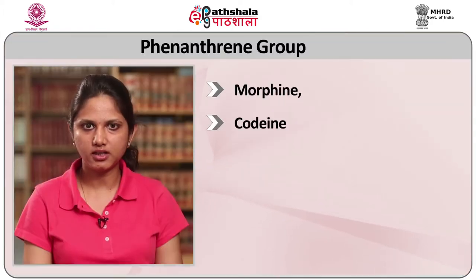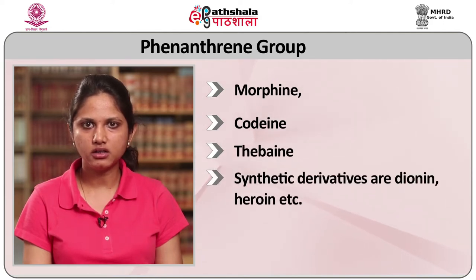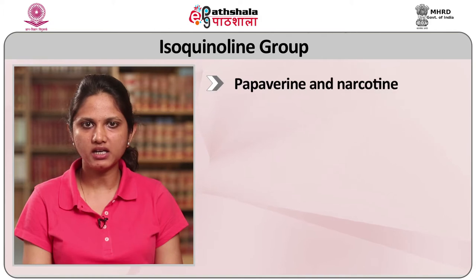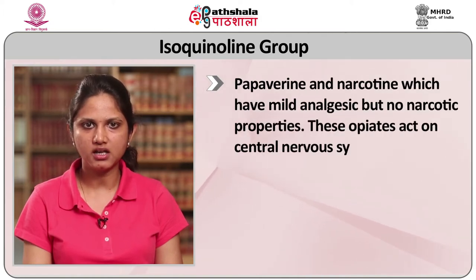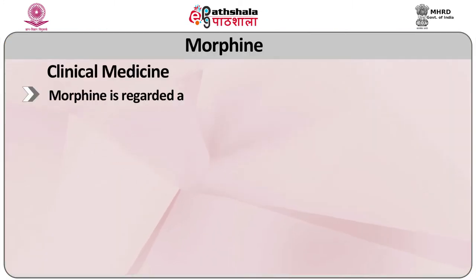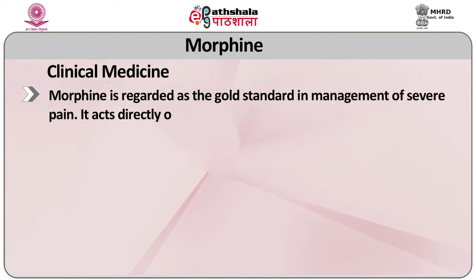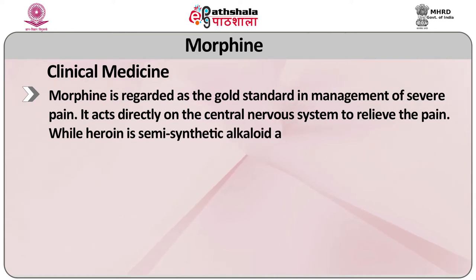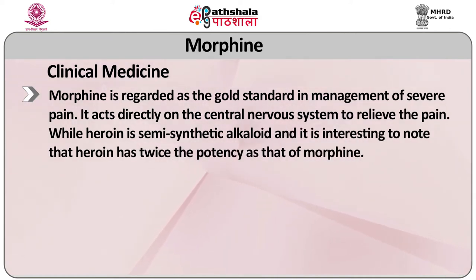The phenanthrine group comprises morphine, codeine, thebaine, and their synthetic derivatives dionine and heroin, which have narcotic properties. The isoquinoline group comprises papaverine and narcotine, which have mild analgesic but not narcotic properties. These opiates act on the central nervous system — first stimulating it and later causing depression followed by necrosis. Morphine is the major naturally occurring alkaloid of opium and is known for its main psychotropic action. In clinical medicine, morphine is regarded as the gold standard in management of severe pain and acts directly on the central nervous system to relieve pain. Heroin is a semi-synthetic alkaloid with twice the potency of morphine.